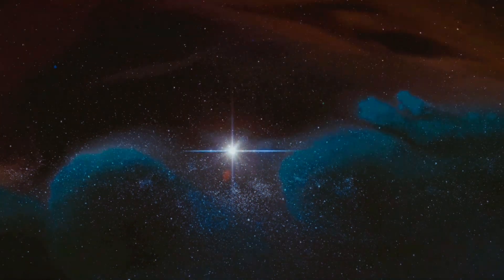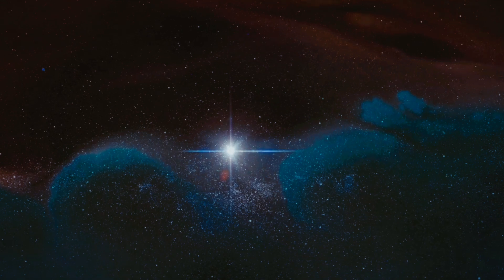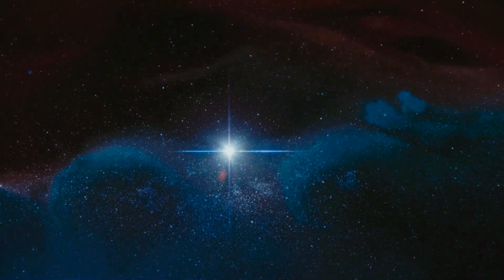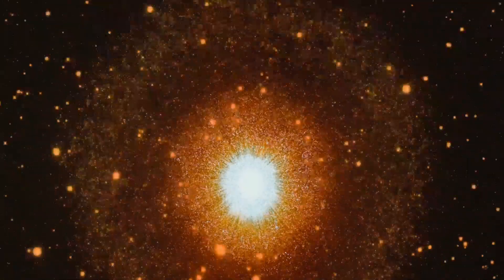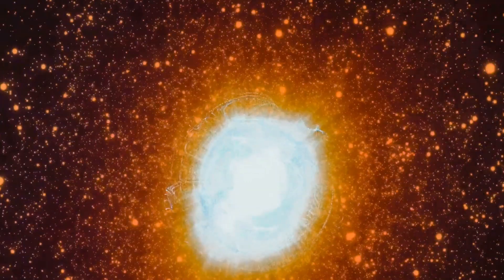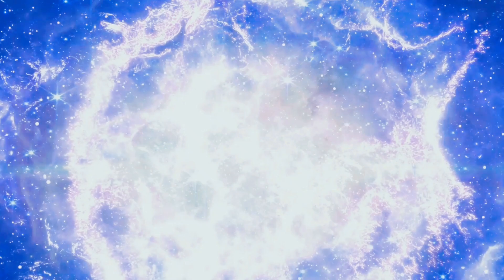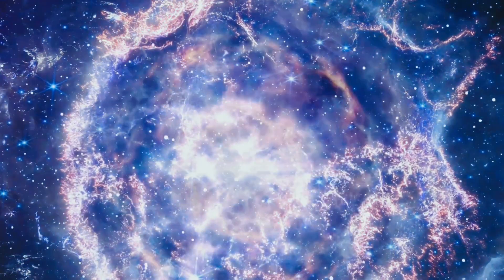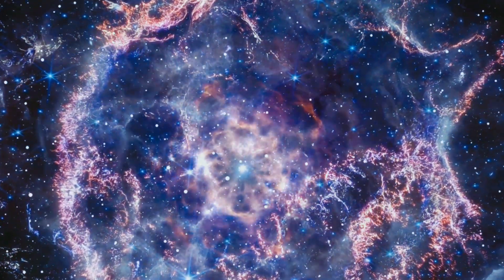Stars are born, live out their life cycles, and eventually die. The life of a star begins in a nebula, a massive cloud of gas and dust. Over millions of years, gravity pulls these particles together, forming a protostar. As the protostar continues to gather mass, its core heats up, eventually igniting nuclear fusion and giving birth to a new star.